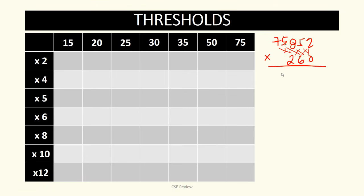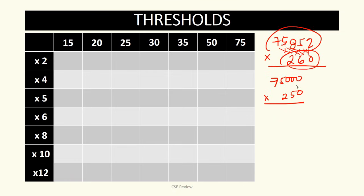You can look at this as 75,000 times 250. I know this is smaller than the original, and this is smaller too. But the important thing is — if you know roughly the range of the answer, you can know that the correct answer has to be higher than this estimate. Anything lower would be incorrect. That is how the threshold technique helps.